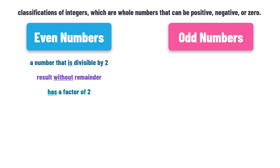Some examples of even numbers are 2, 4, 6, 8, 10, and so on. If we try to divide all these numbers by 2, we will always get a whole number.